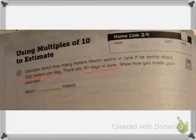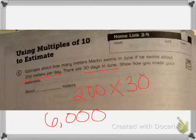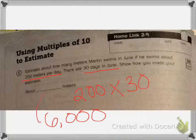So our estimate: 200 times 30. 2 times 3 is 6, and then I add my three zeros. About 6,000 meters in the 30 days of June. I put my answer right there.